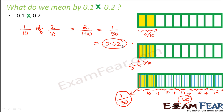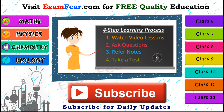And that is the product of 0.1 and 0.2. The reason I did all this was not to create confusion, but to make you understand the real meaning of multiplication of two decimal numbers. Once you have understood this, I am going to tell you tips on how to calculate fast. Please visit examfear.com for free quality education — watch video lessons, ask your questions, refer to notes, and take free online tests. We have content for class 6 to 12 on physics, chemistry, mathematics, and biology along with practical videos. Please subscribe to our channel for daily updates.